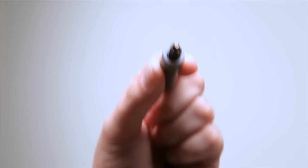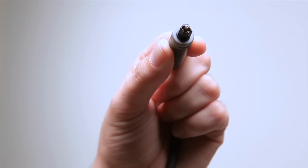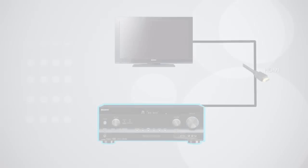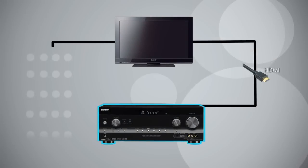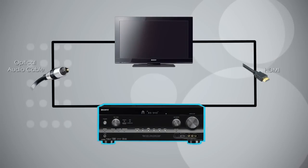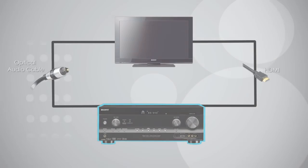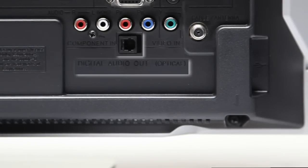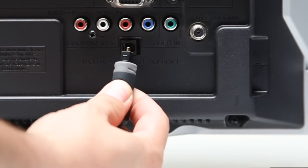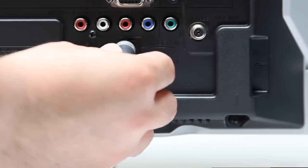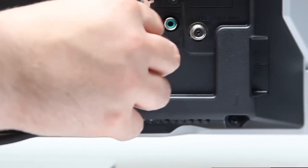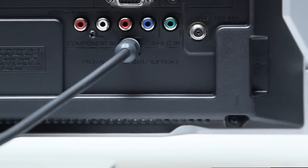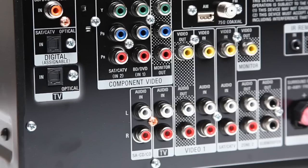You will also need the digital audio optical cable. Use this cable to connect the TV to the receiver. Take one end of the digital optical audio cable and connect it to the TV's output, then connect the other end to the receiver's input.